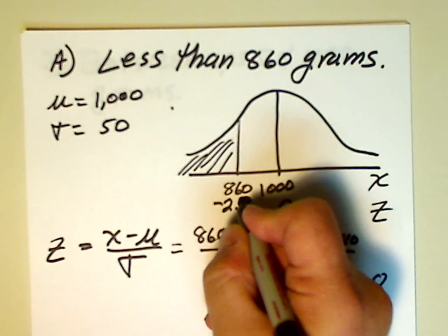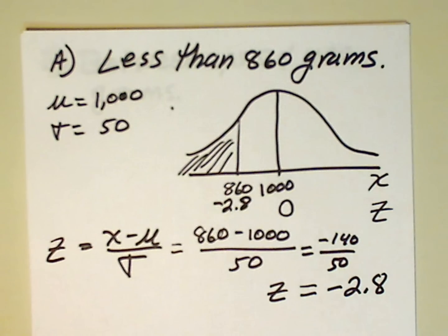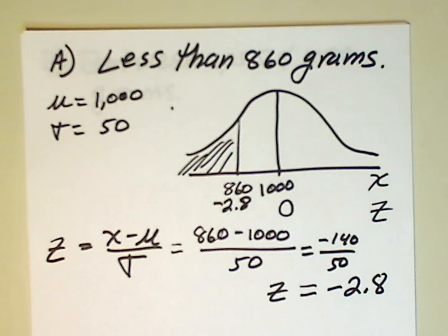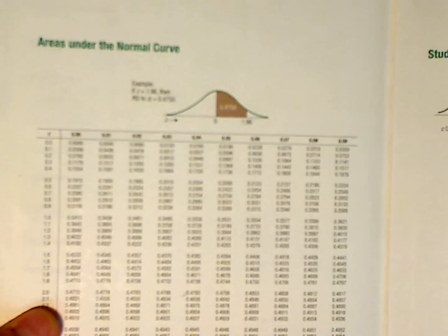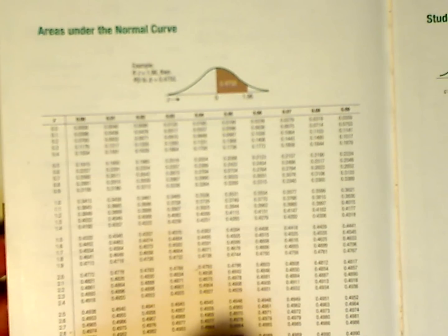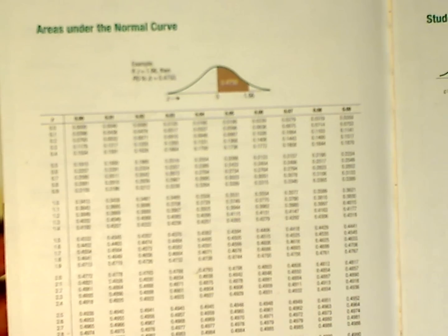So, negative 2.8 is our z value there. Well, z value here is associated with an area under the normal curve. And let's use our textbook to find that out. So, we're going to go over here to the textbook. We're going to go down to 2.8 and over to the first column, which is 0.00. And we see that it's associated with an area under the curve of 0.4974.